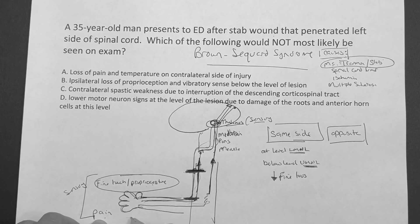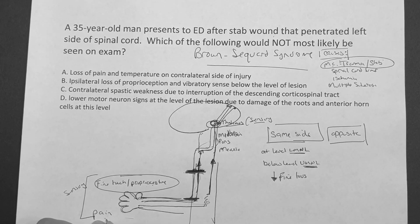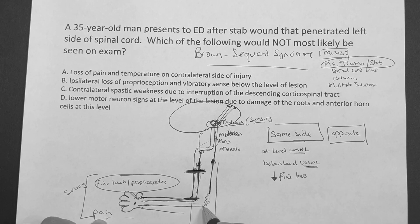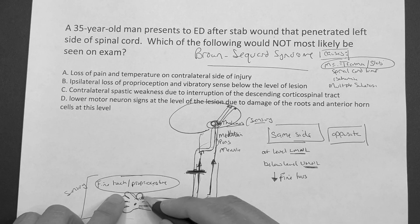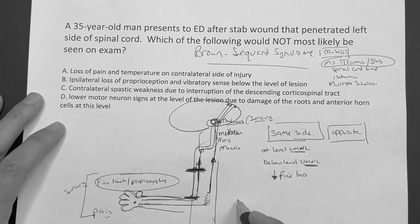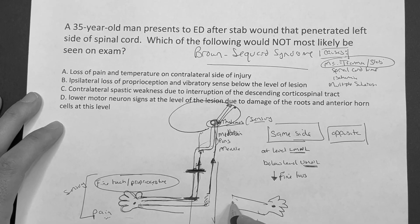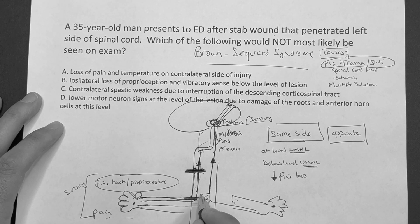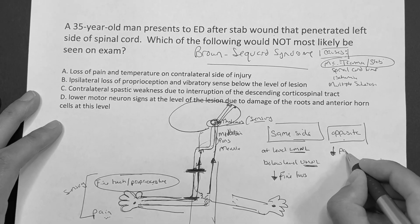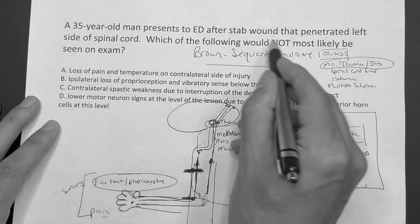What about pain on the same side? Pain crosses over to the other side, so if someone injures their hand on the injured side, they'll still feel pain in that extremity because the pain signal crosses over. You wouldn't feel fine touch in that extremity, but you'd feel the pain. However, on the opposite side, pain already crossed over and then gets cut off by the injury — so on the contralateral side, you'll have decreased pain and temperature. That's all you need to know for Brown-Séquard.